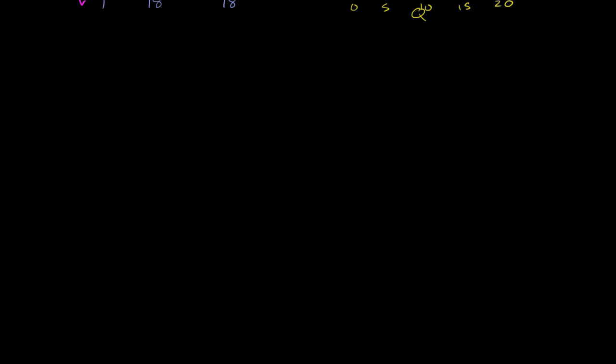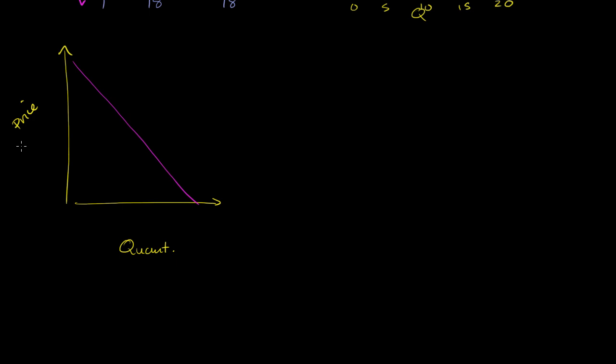I want to do one more video on total revenue and price elasticity of demand, just to make sure that the relationship between the two is an intuitive one. So let's draw an arbitrary demand curve. This is my price axis, and that is my quantity demanded axis. Let me just draw an arbitrary demand curve right over here, and let's pick some price and quantities on this demand curve.